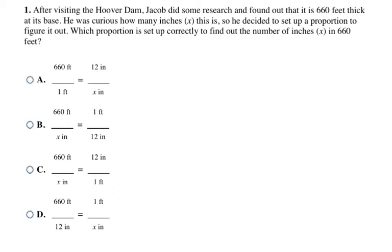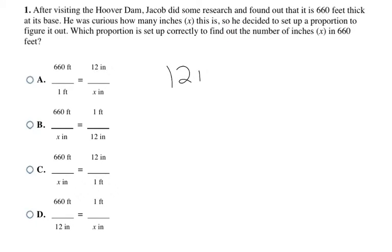Our first problem isn't asking us to solve anything yet — just to identify the correct proportion to set up. Number one: Jacob found that the Hoover Dam is 660 feet thick at its base and wants to find how many inches X that is. We need to set up a proportion converting feet to inches, using the fact that there are 12 inches in one foot.